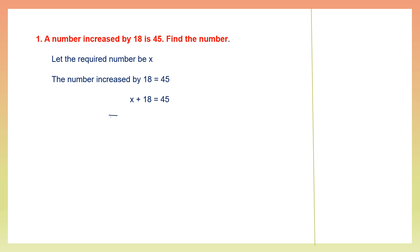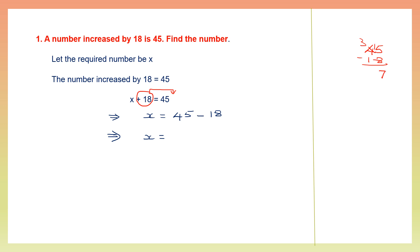We can find the value of x by writing 45 on the right hand side and transposing this plus 18 from the left hand side to the right hand side, so that becomes minus 18. So 45 minus 18: 15 minus 8 is 7, 3 minus 1 is 2. So we have found the value of x to be 27, and the required number is 27.